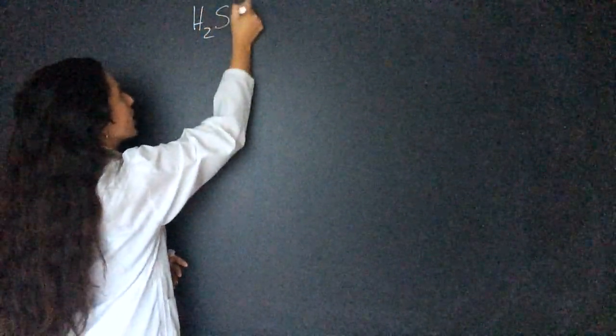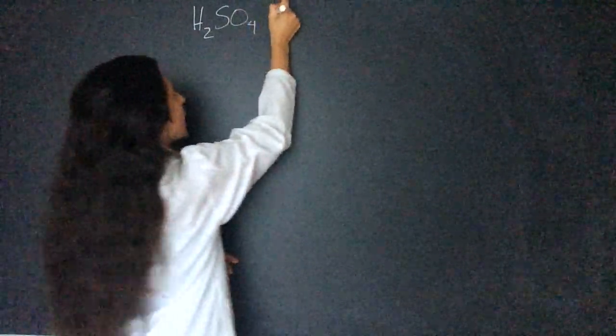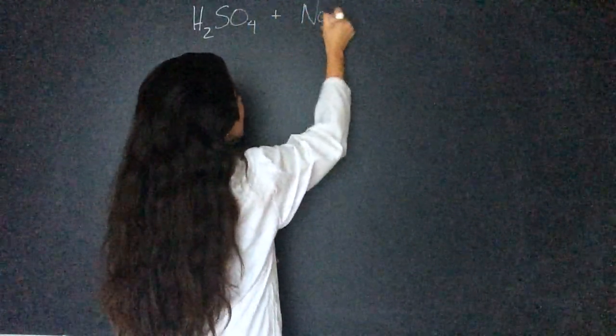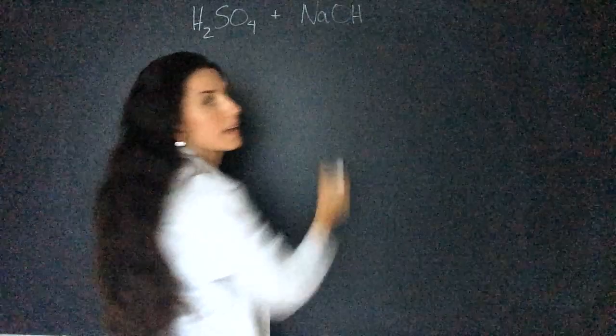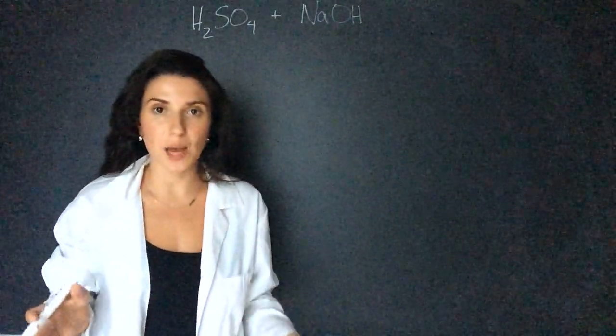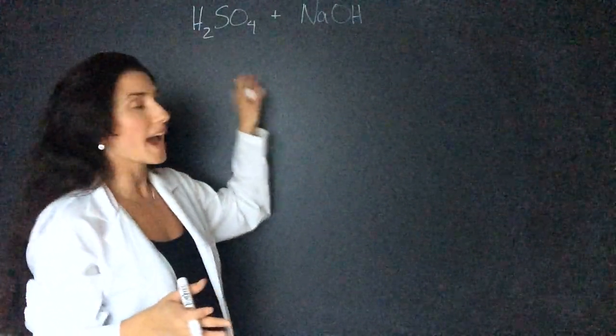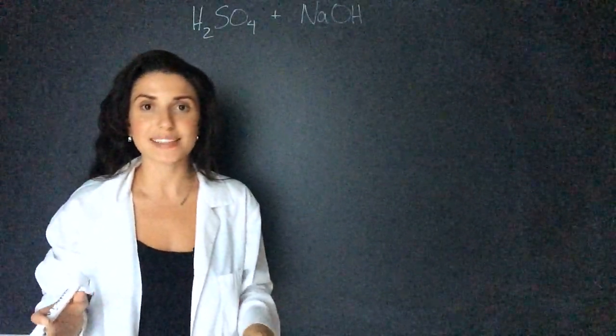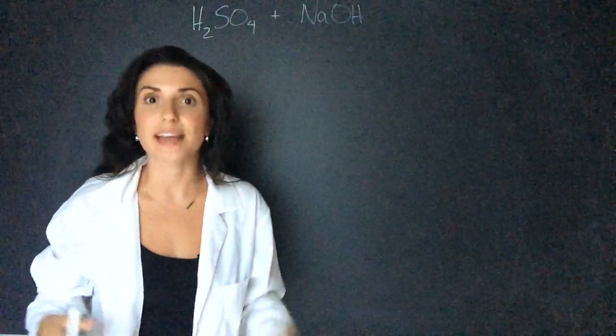First thing we're going to do is write out the equation and balance it. So we have H2SO4 plus sodium hydroxide. Now if you remember from our first couple lessons when a strong acid and a strong base react they make a salt and water.